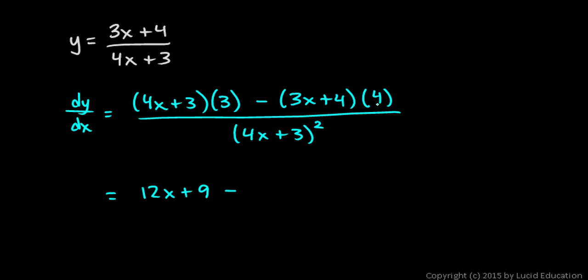Distribute this 4, really think of it as a negative 4 distributing, and you get minus 12x minus 16. That's still all over 4x plus 3 squared. And then 12x minus 12x, okay that cancels out.